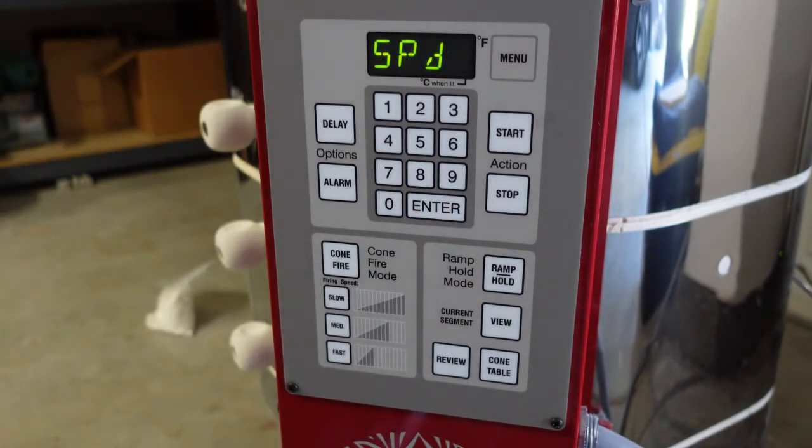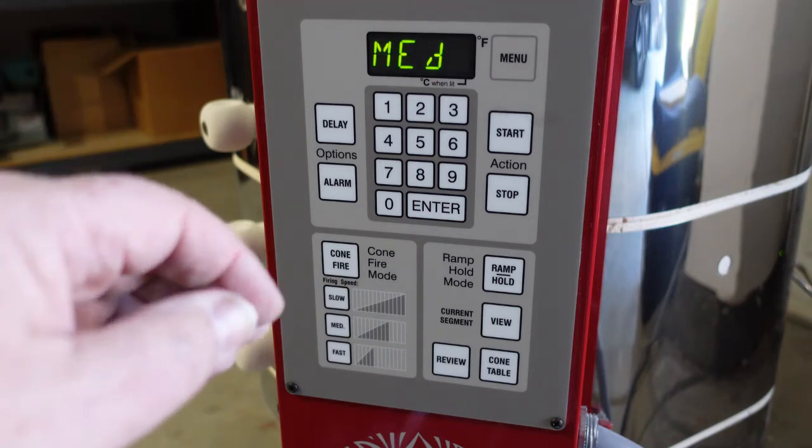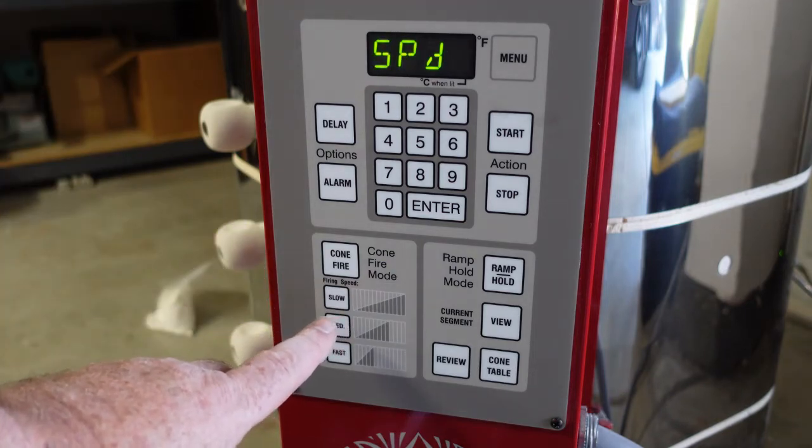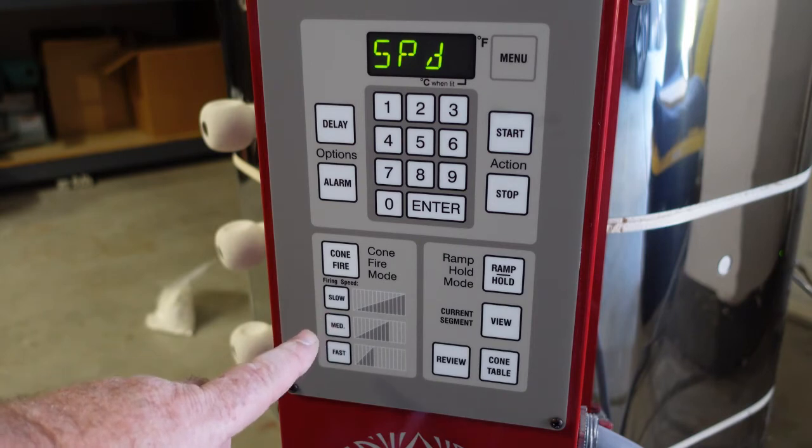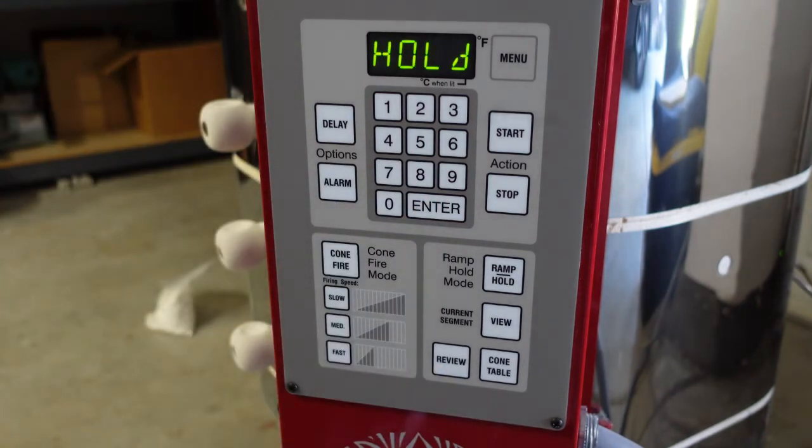Now it says speed. You want to do slow, medium, or fast. If my clay was a little bit wet, maybe I would do a slow firing, which means it would bring the temperature up very slow. My clay is really dry, so I'm just going to do a medium, which is kind of the standard. I'm going to say medium speed and enter.